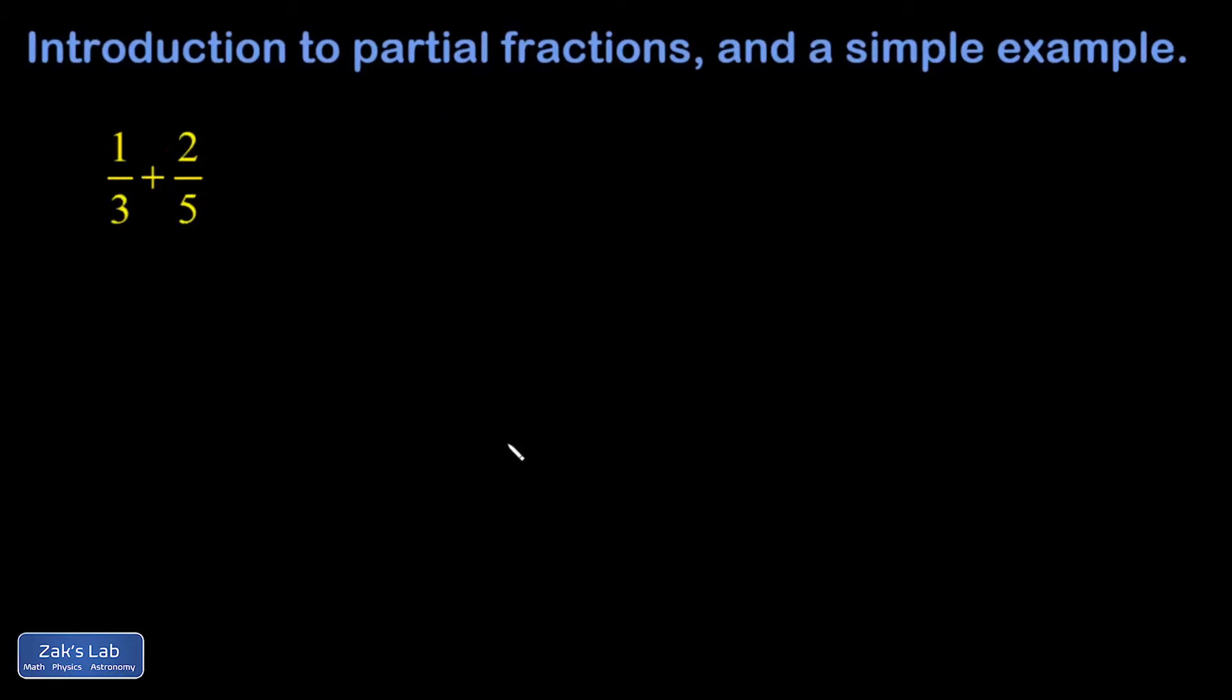Here's a simple fraction addition problem - it might seem a little weird to see that in the middle of a calculus class, but by messing around with this we can motivate the whole technique of partial fractions decomposition. So one-third plus two-fifths - how do we add this? We have to get a common denominator. I'm going to supply a missing five to the first fraction by multiplying it by one, just written as five over five. Second fraction multiplied by one written as three over three.